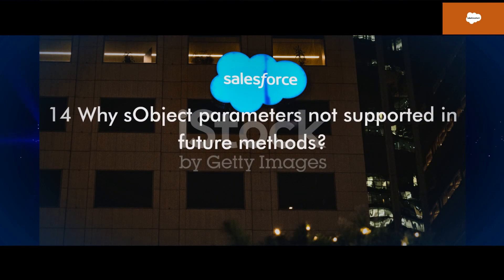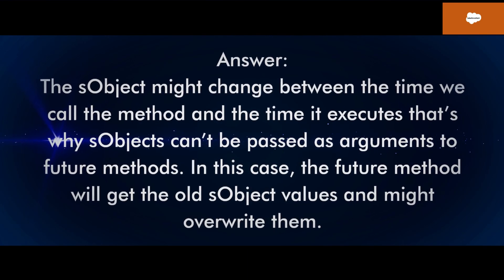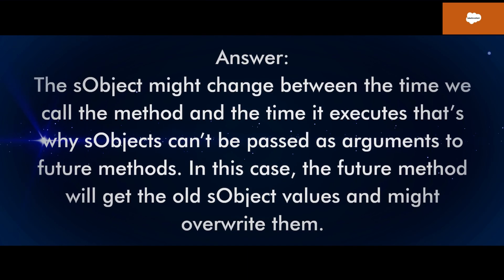Q14: Why are sObject parameters not supported in future methods? The sObject might change between the time we call the method and the time it executes. That's why sObjects can't be passed as arguments to future methods — the future method would get the old sObject values and might overwrite them.